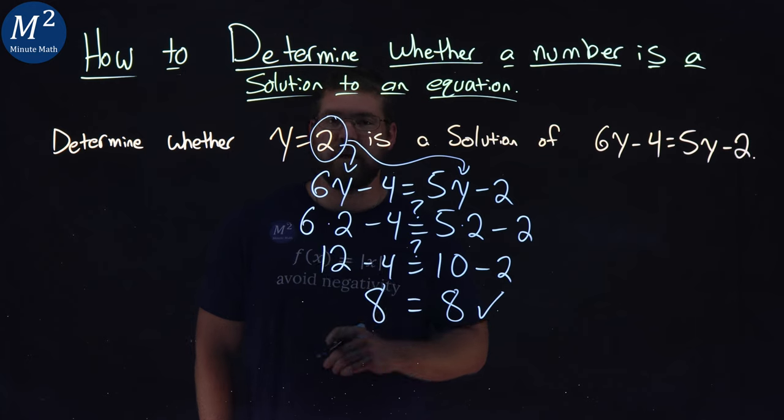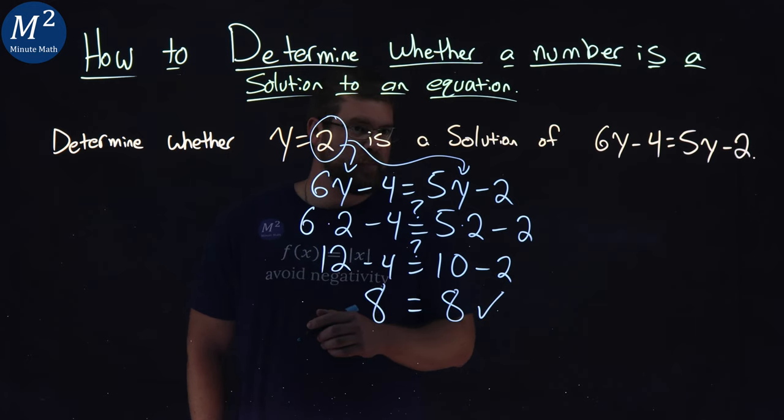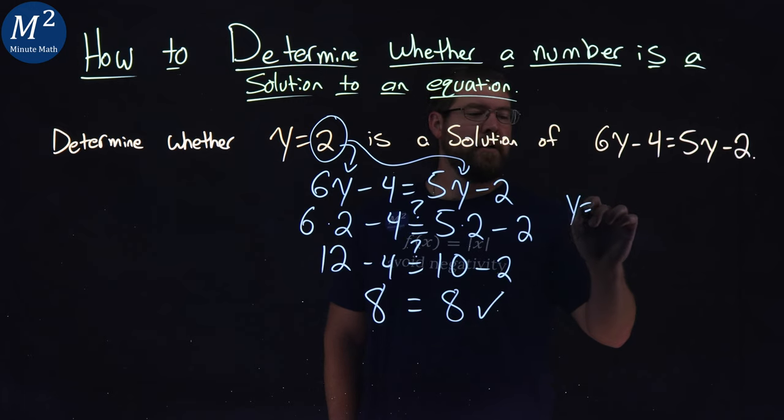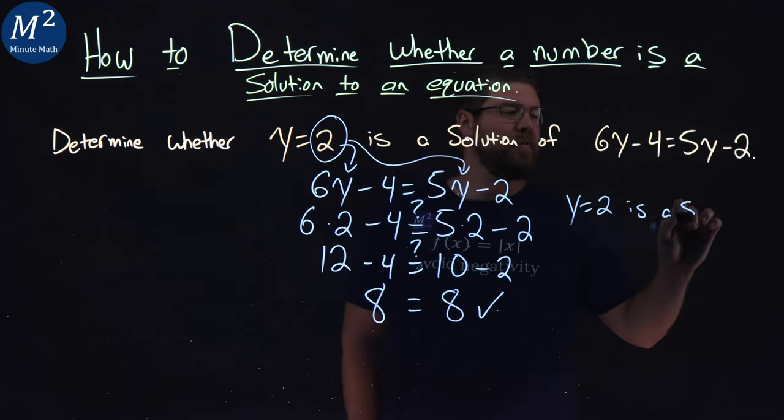The left and right hand side are equal. So what does that tell us? Well, it tells us that y equals 2 is a solution.